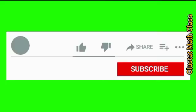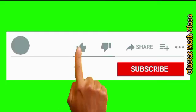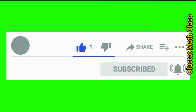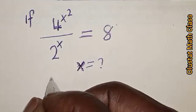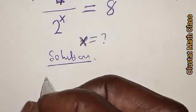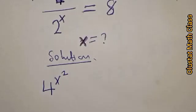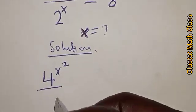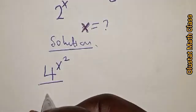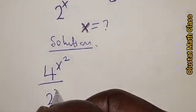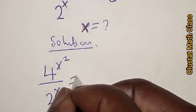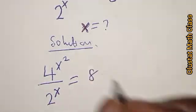But before we proceed, please don't forget to like, share, comment and subscribe. Thank you. Solution. We have 4 raised to power s squared divided by 2 raised to power s equal to 8.